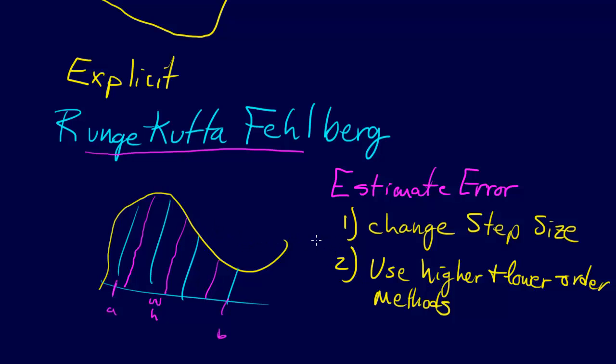And so with that, then we're changing the order of the method that we're using over that interval, and that is the general Runge-Kutta-Fehlberg approach. Now, the thing is, when we change this step size or use a higher order and a lower order method,